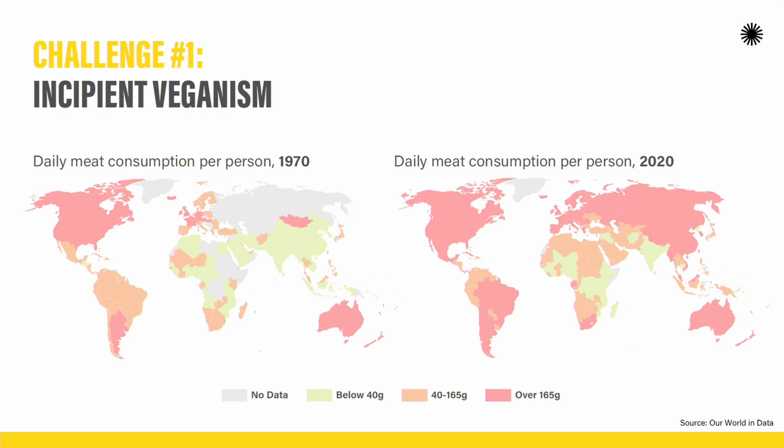In the Global North, most people were already consuming a lot of meat in 1970. Countries like the United States, Canada, and parts of Europe were already consuming high amounts of meat — or at least medium amounts — and some moved from orange to red between those years.